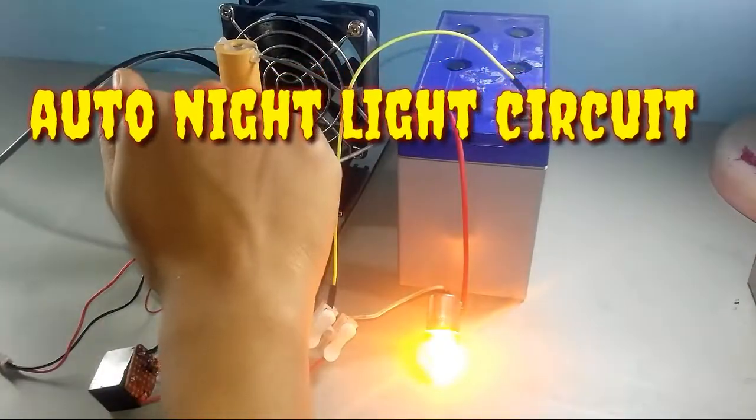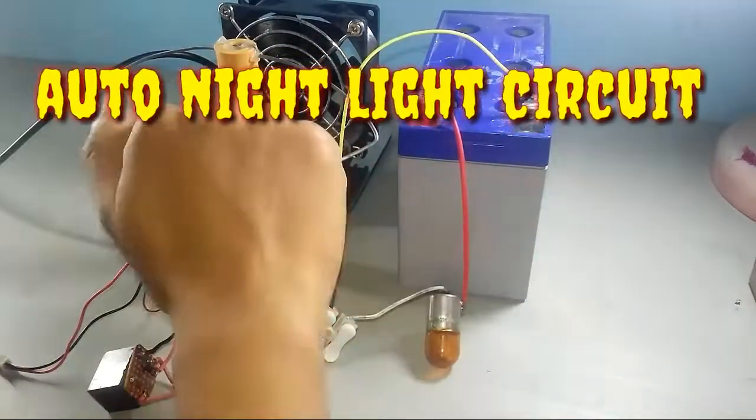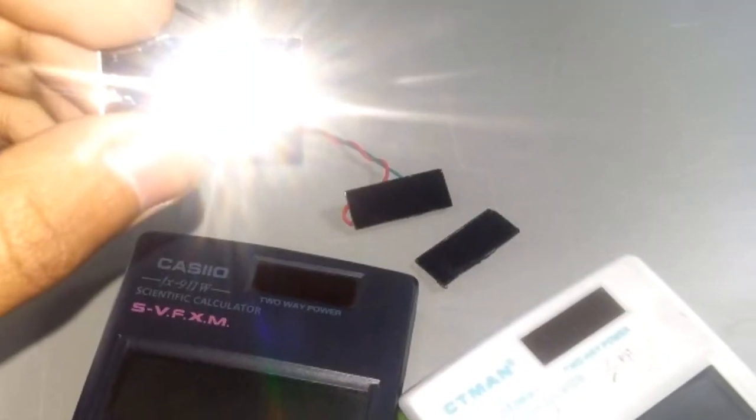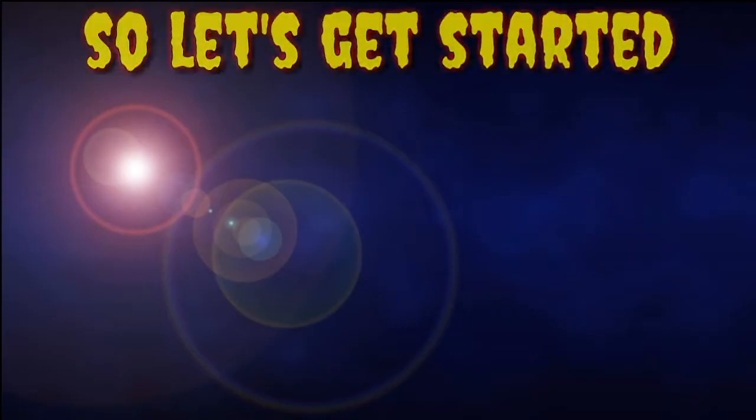This video is based upon the construction of a night light turn-on switch that will automatically switch on the light at night. And the coolest thing is it makes use of the solar cell of a calculator. So let's get started.